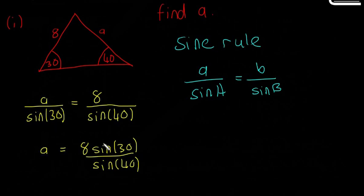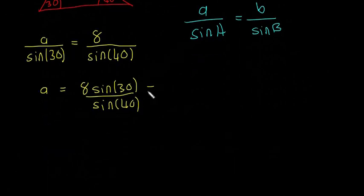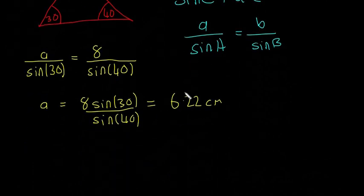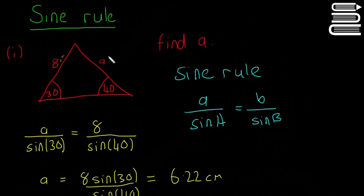And then this side, sine 30, you'll be left with sine 30 on the top. So then it's just about sticking that into your calculator, and you'll find your answer for A is about 6.22 centimeters. I probably should have written that that's 8 centimeters as well.